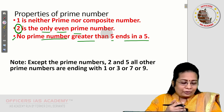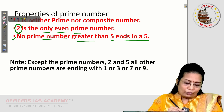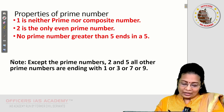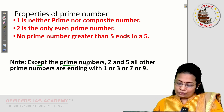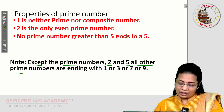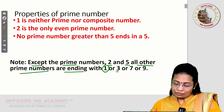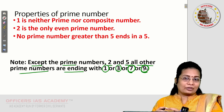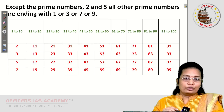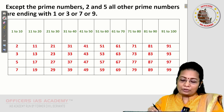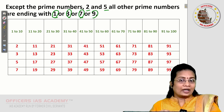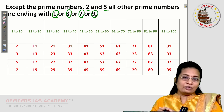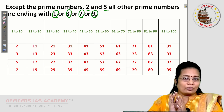Using these properties: except for the prime numbers 2 and 5, all other prime numbers end with 1, 3, 7, or 9. Keeping this in mind, we can shortlist the prime numbers from 1 to 100.